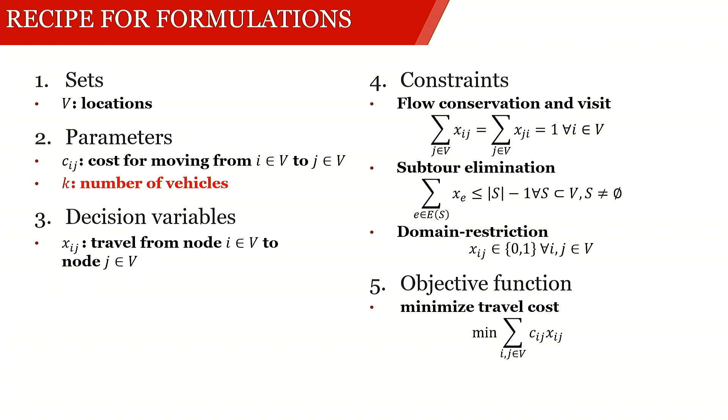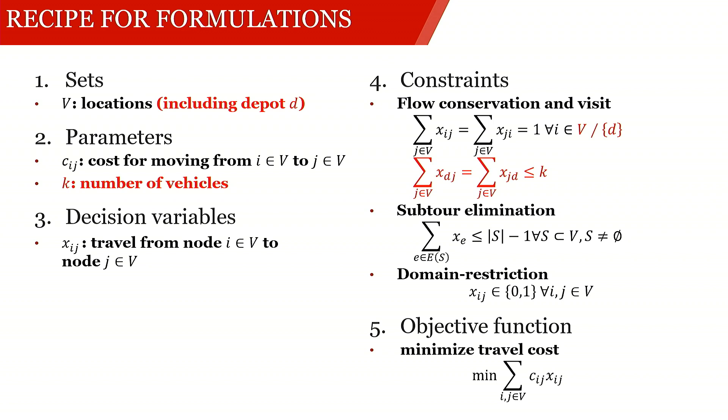That means we have to split the flow conservation and visit constraint. So instead of having one constraint which tells us that at every node we visit exactly once, we now differentiate at the depot. So at the depot, we have the same number of arcs coming in as going out, and this number is at most K. While at all other nodes, we visit exactly once, which means we have exactly one incoming and exactly one outgoing arc.